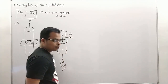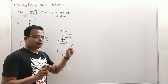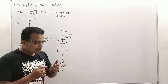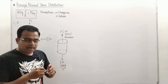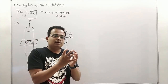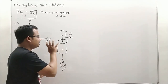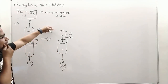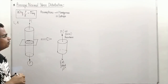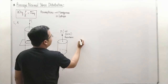By definition, the internal resistance offered per unit area is what is known as stress. Today I'll prove to you that internal resistance per unit area is actually equal to the averaged value of normal stress. This is all about the internal resistance offered.